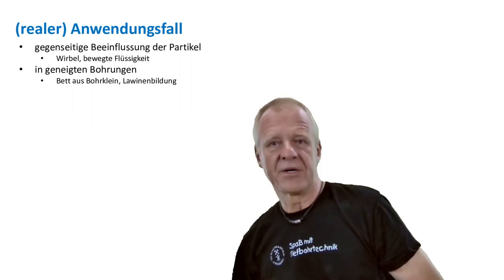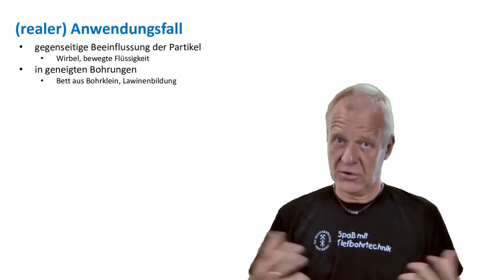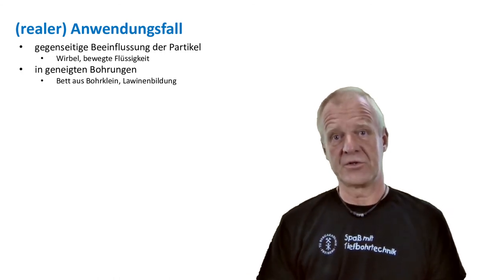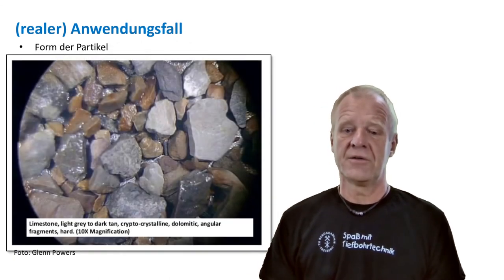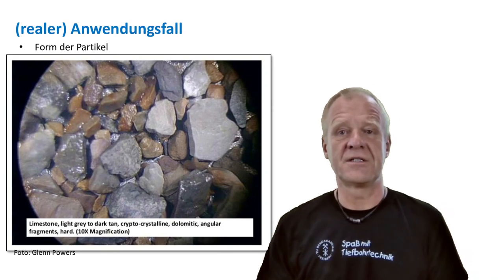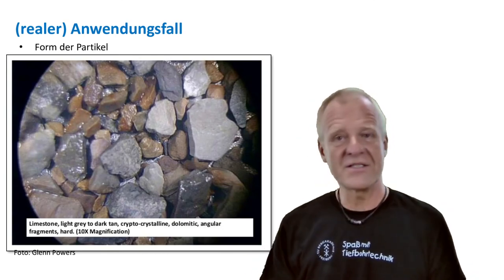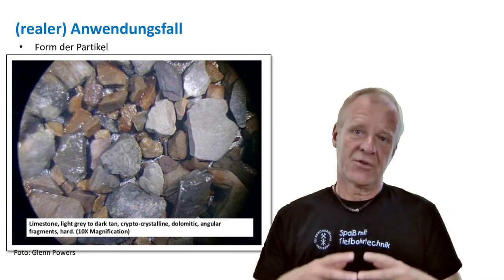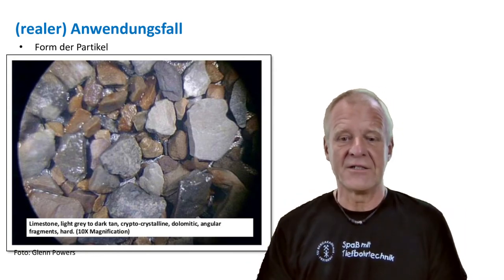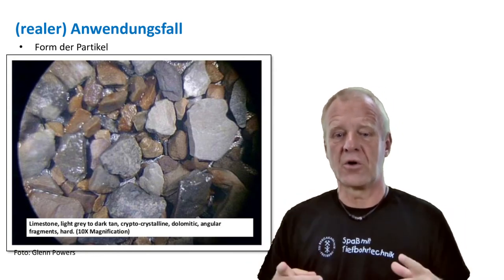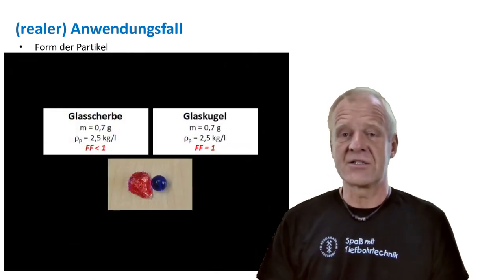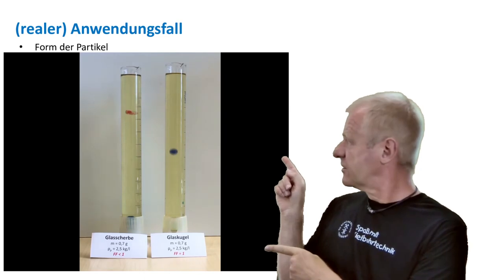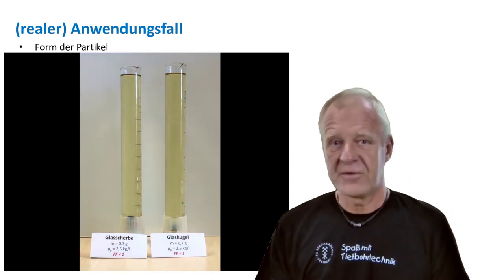So in reality, the calculation of the sink rate is a bigger problem. It is not easy at all, especially because the cuttings are not round or of equal size and density. As you can see in the picture, real cuttings have different sizes, consist of different materials, and have different shapes. The shape of a cutting even has impact on the sink rate. As you can see in this experiment, the plate has the same weight and density as the ball, but the ball sinks faster than the plate.